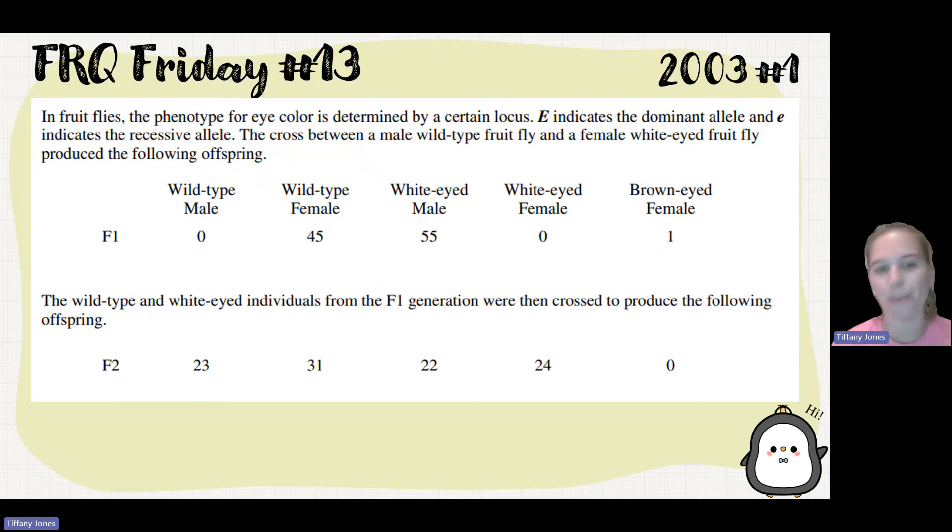Then we cross the wild type and the white eye and we get 23, 31, 22, and 24 approximately as you see on the screen.